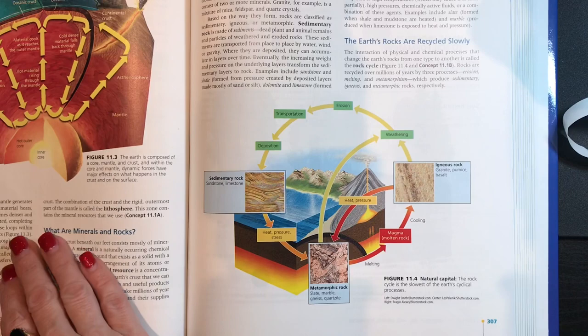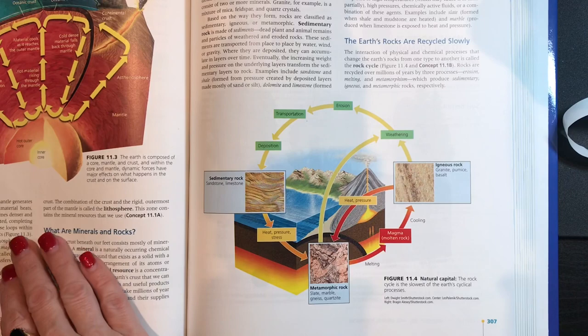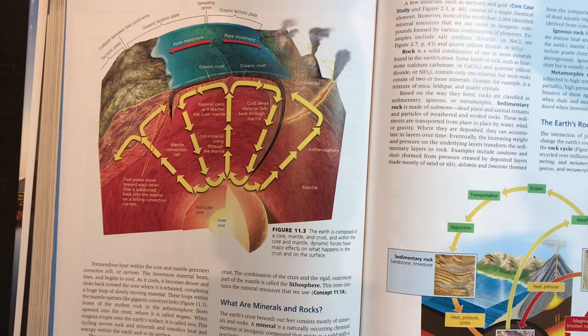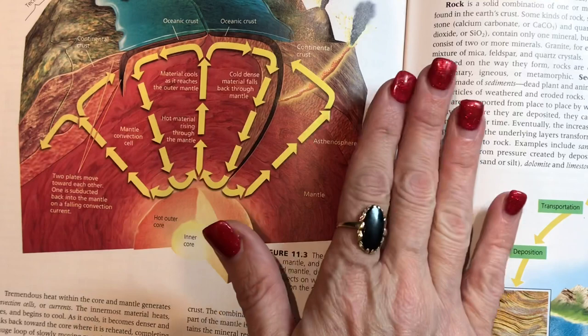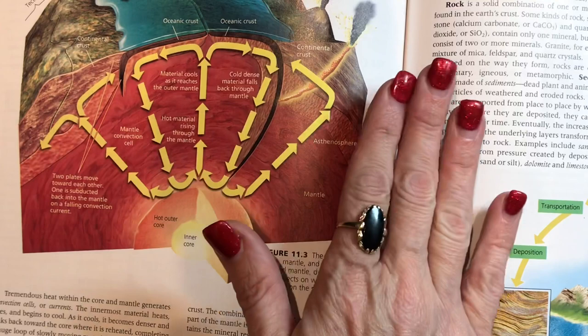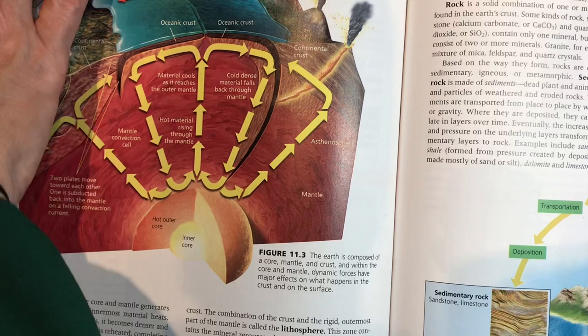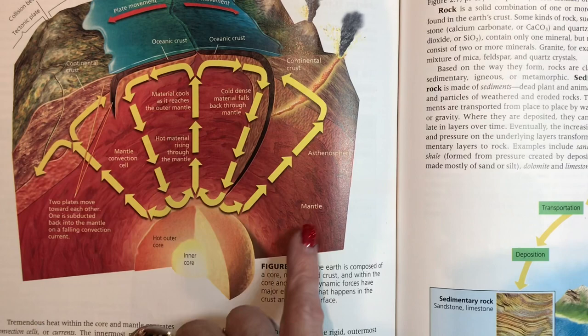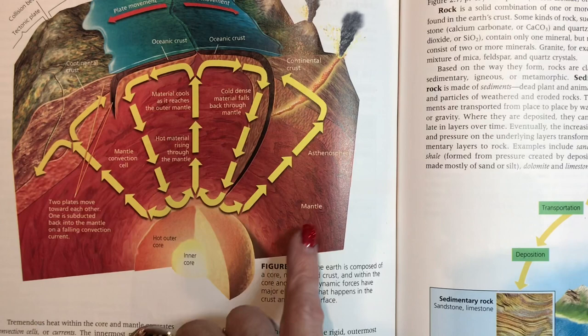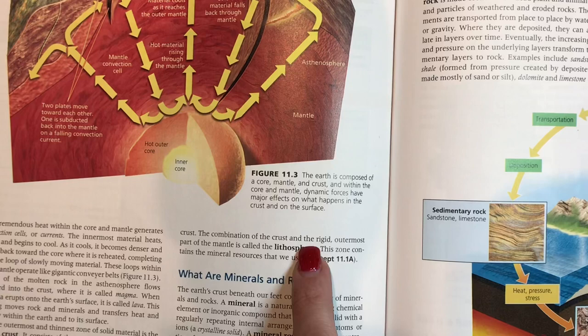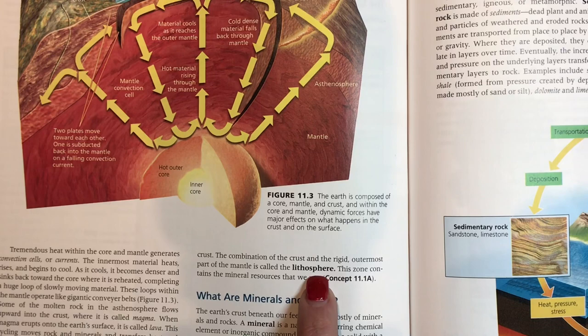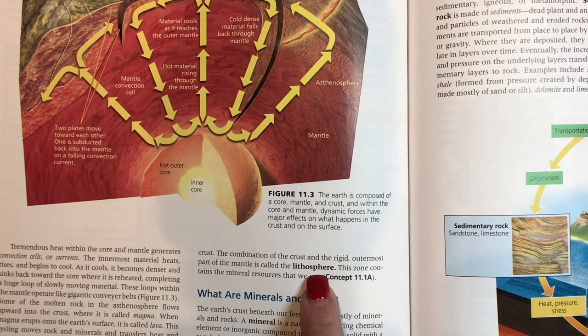Core, mantle, asthenosphere, crust, and lithosphere. The core is the hottest part when you do a cross section of the earth. Then you have the mantle, which is the semi-liquid rock area. The asthenosphere is the very top of that, and your crust is part of your lithosphere. A combination of the crust and the rigid outermost part of the mantle is the lithosphere — that is what your tectonic plates are made out of.